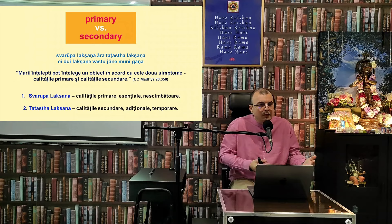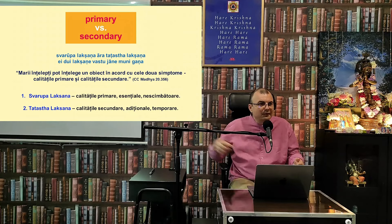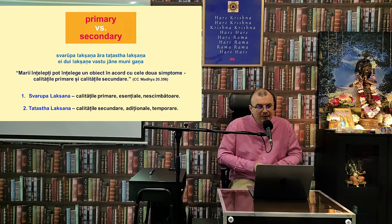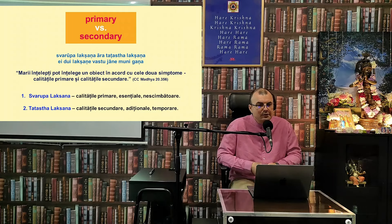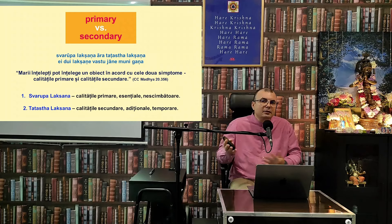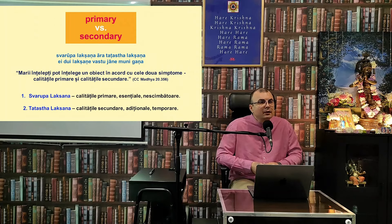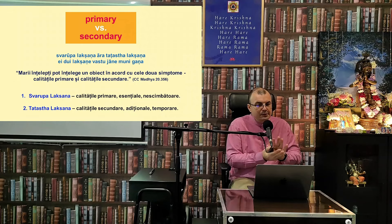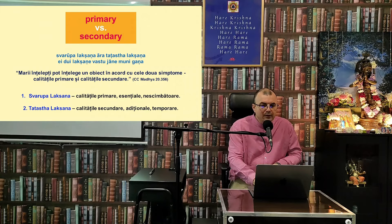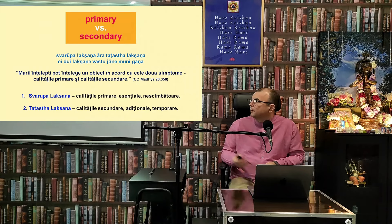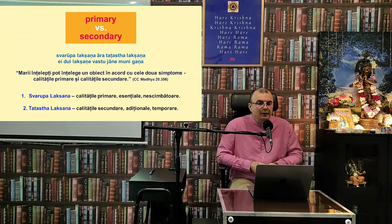Aspectul secundar al kirtanului este ritmul, vocea — care poate fi diferită — sau instrumentele muzicale pe care le folosim. Uneori avem violoncel, alteori nu. Uneori, chiar când nu sunt instrumente muzicale, putem doar să batem din palme. Acestea sunt aspecte secundare ale kirtanului.